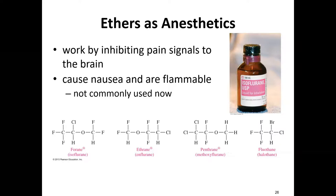Ethers work by inhibiting pain signals to the brain. Some common ones that were on the market include purine, etherein, and tenderein — examples that were actually used as anesthetics.